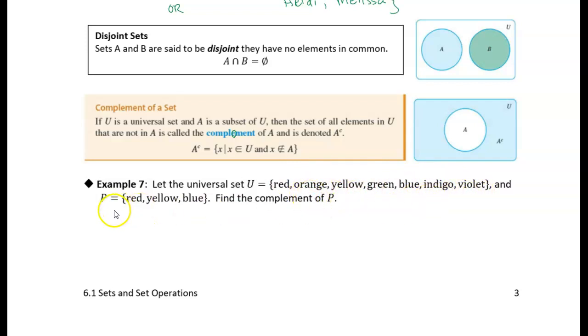And we let P, which appear to be primary colors, so that's a very good choice of letter, the primary colors P. P is the set red, yellow, blue. And now we want to find the complement of P.